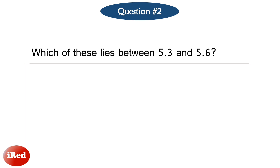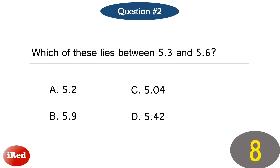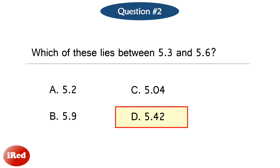Question 2: Which of these lies between 5.3 and 5.6? The correct answer is letter D, 5.42. The number 5.42 lies between 5.3 and 5.6 because it is greater than 5.3 and less than 5.6.